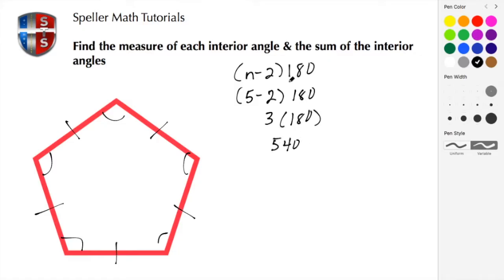So here we found the sum of the interior angles. Next thing we want to do is find the measure of each one of these interior angles. Well, to do that, we're going to take the measure of 540 and we're going to divide that by the number of sides.